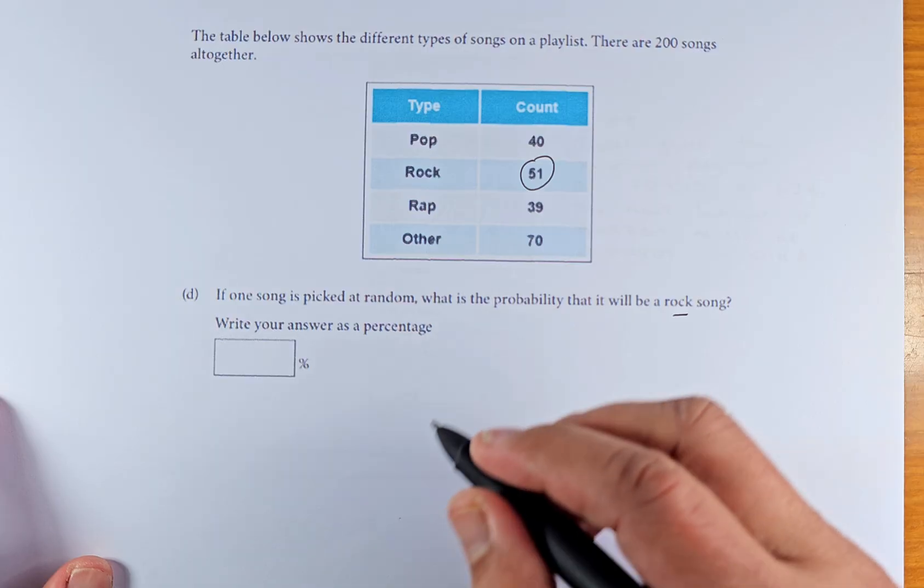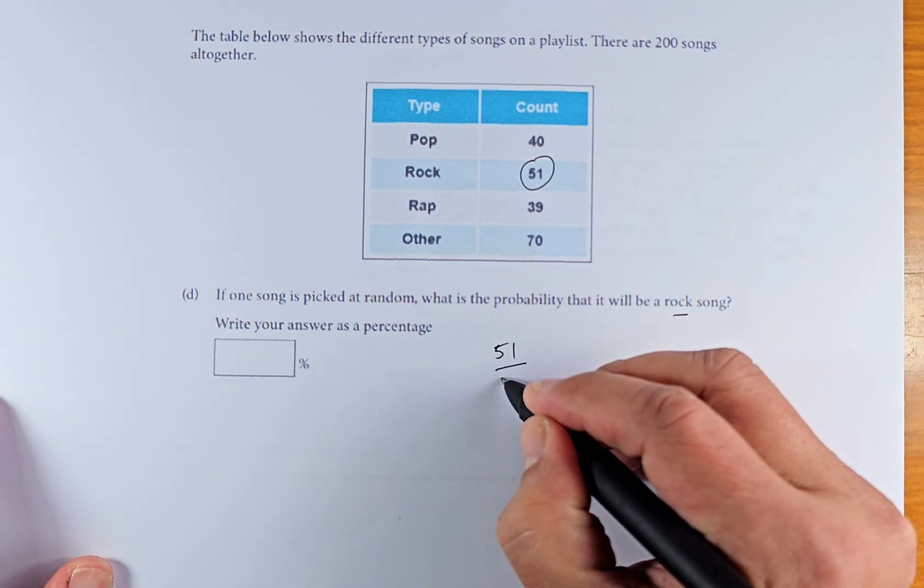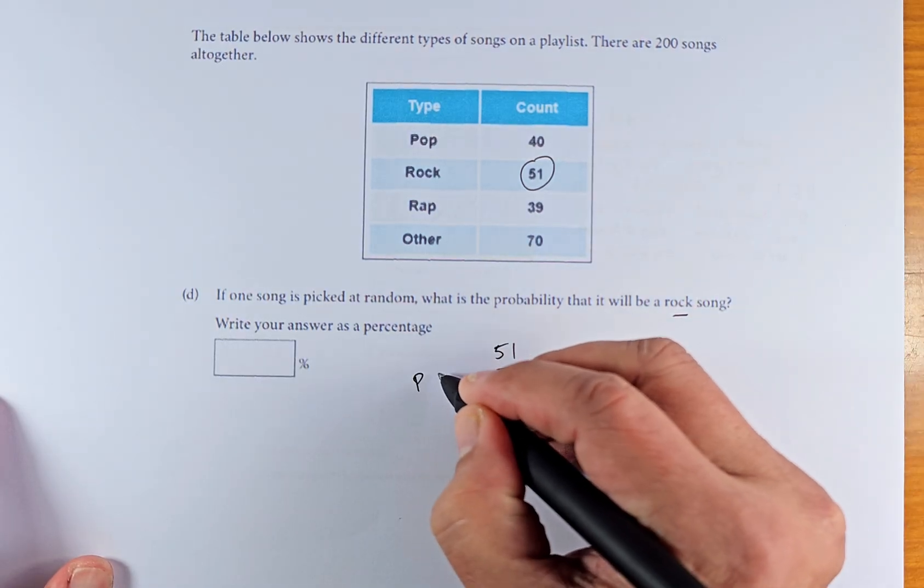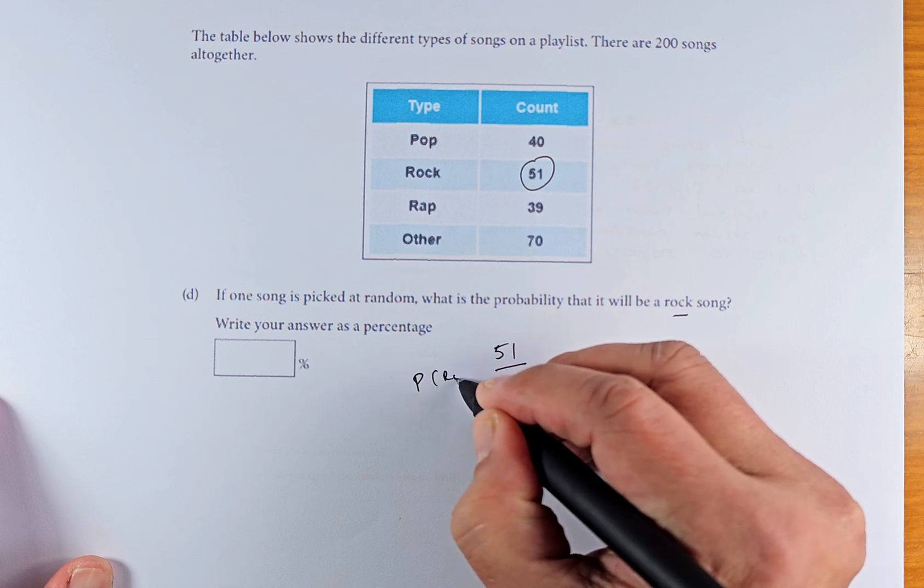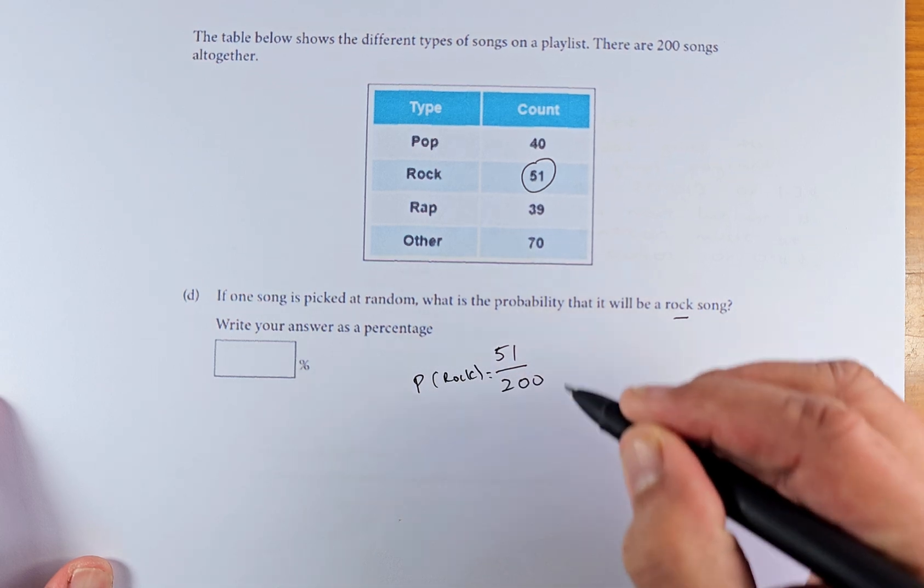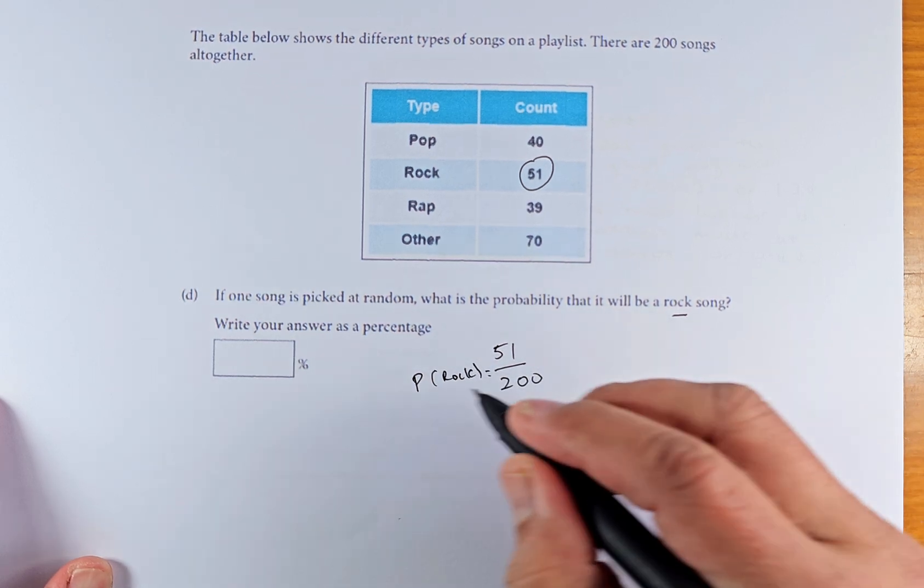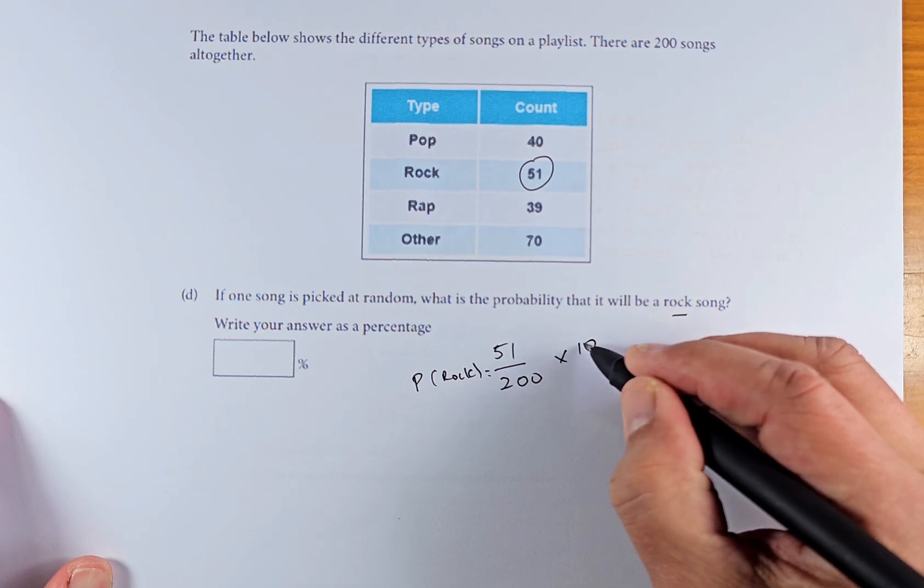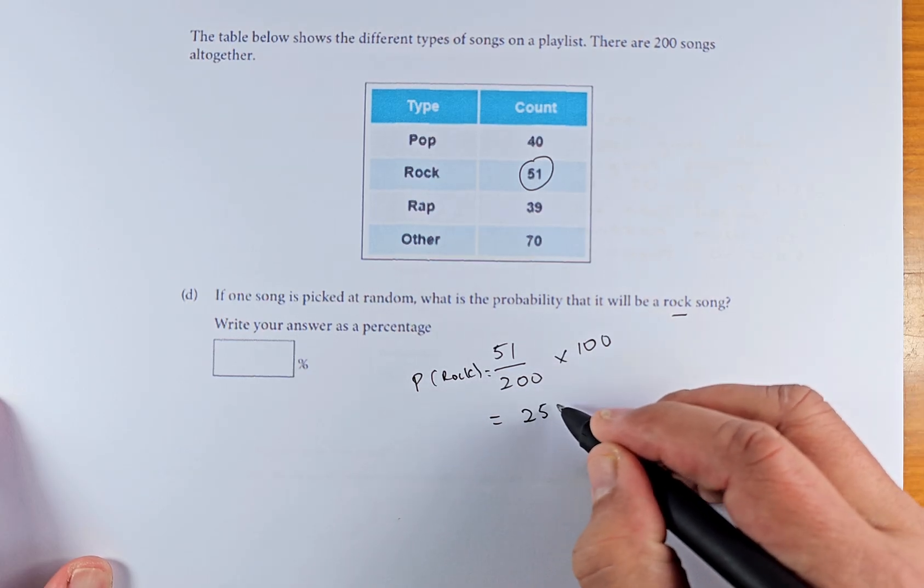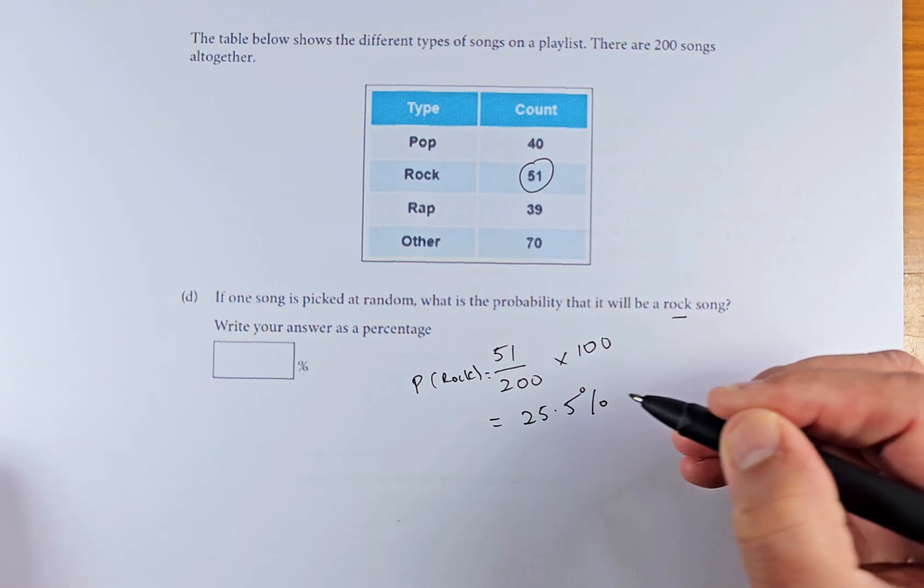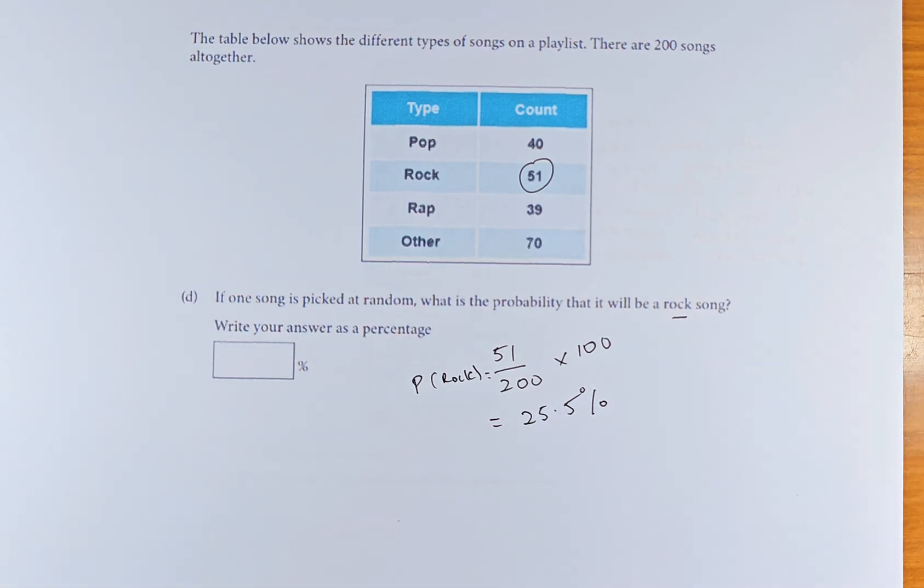So rock song is 51. To calculate the percentage, it's 51 out of 200. You're going to calculate the probability of rock. So 51 out of 200, because you want the percentage, you multiply by 100. Put in your calculator. The answer is 25.5%. So you can get it right. That will be outcome number 1 again.